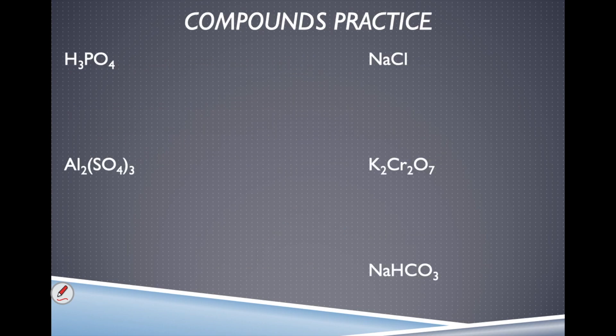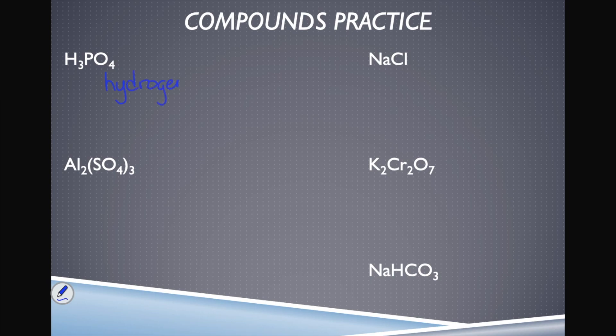Let's take a look at a couple of examples that tell us what elements we have present in these compounds and how many of them. For this first compound, H₃PO₄, the elements present are hydrogen — that's the H — then we've got P, which is phosphorus, and O, which is oxygen.